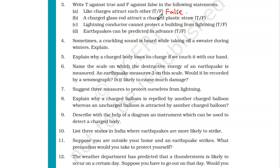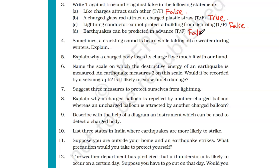A charged glass rod attracts a charged plastic straw. Absolutely — a charged glass rod attracts a charged plastic straw because they acquire opposite charges. Number C: lightning conductor cannot protect a building from lightning. False — that is why lightning conductors are installed in buildings, to protect them from lightning. Number D: earthquakes can be predicted in advance. Lightning and cyclones can be predicted in advance, but an earthquake is a natural phenomenon that cannot be predicted in advance. So this answer is false.